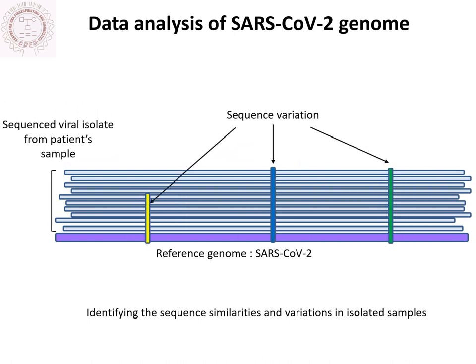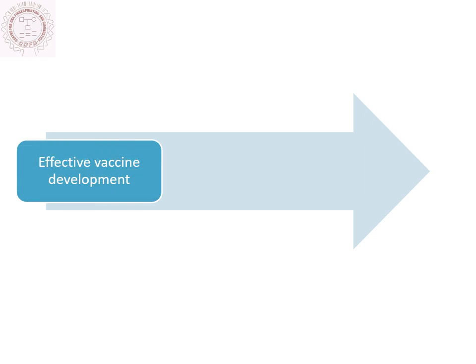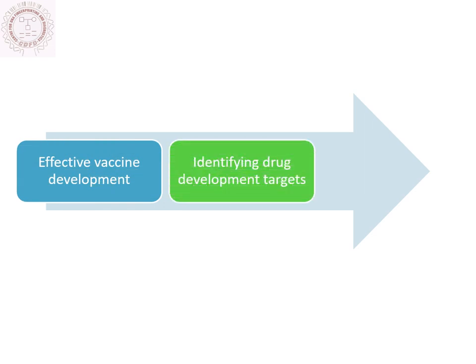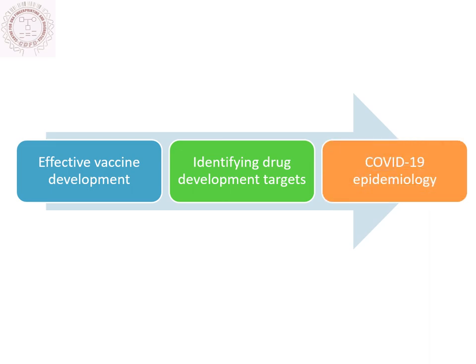Phylogenetic analysis of obtained patient sequences has allowed researchers to trace back the origin of COVID-19 to bats. Applications of next-generation sequencing are assisting in effective vaccine development, in identifying drug development targets, and in understanding COVID-19 epidemiology. National Genomics Corps is proud to contribute to the global mission of combating COVID-19 together.